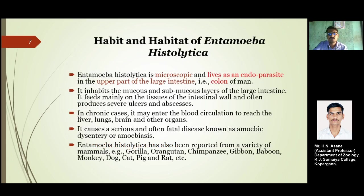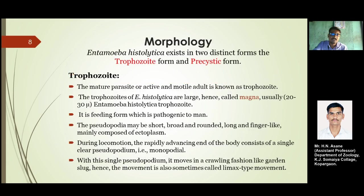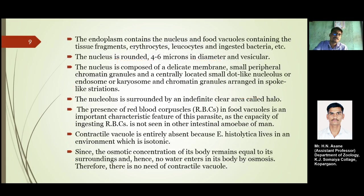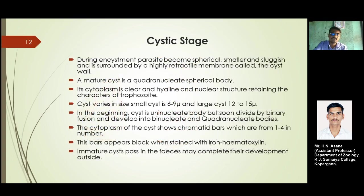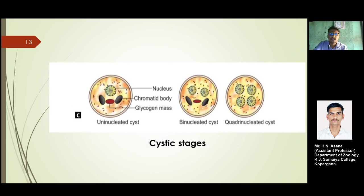It is the third leading parasitic cause of death after malaria and schistosomiasis. We studied its habitat and morphology, including the various infective stages and adult stages. The trophozoite will be the infective stage, then the pre-cystic stage in between, and the cystic stage — the last stage — will be the quadranucleate or binucleated cyst.